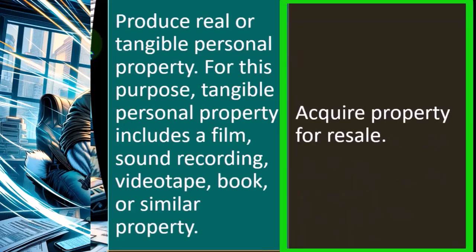Acquire property for resale. So if we're producing something, you would think that as we produce it, we're producing it in order to sell it — so it might be something that would be capitalized basically as inventory. If we acquire something, then clearly it's going to be inventory because we purchased it in order to sell it in the future.